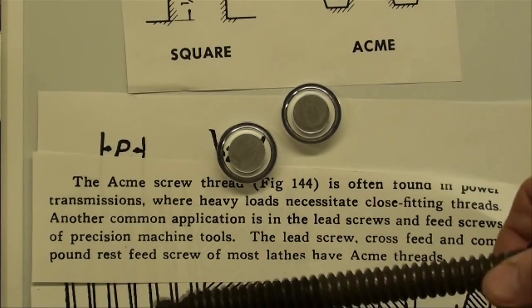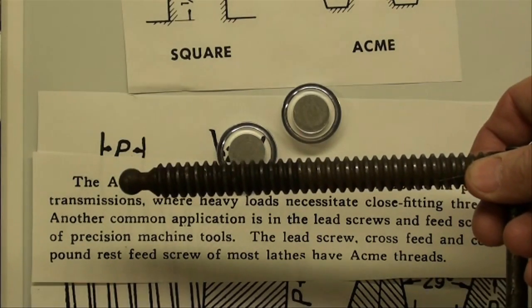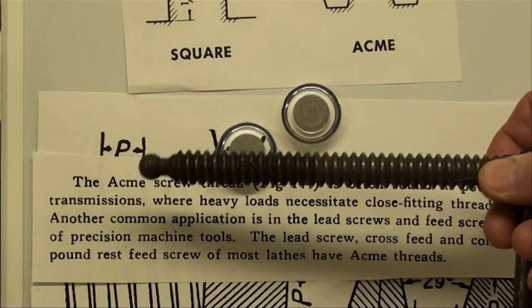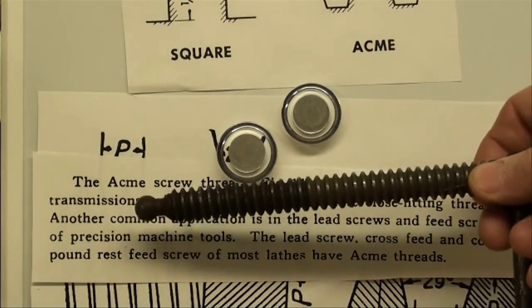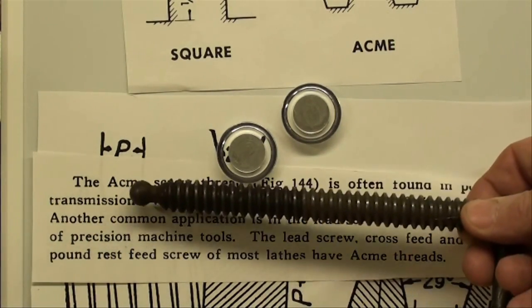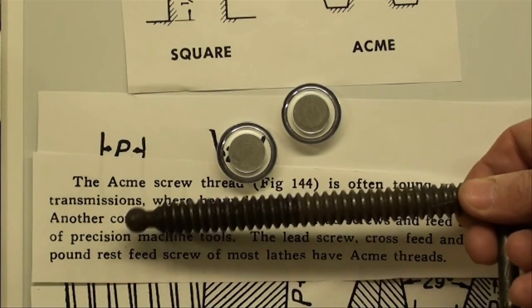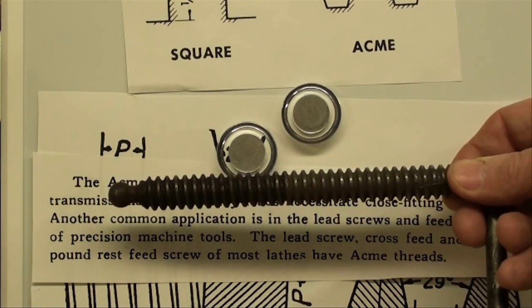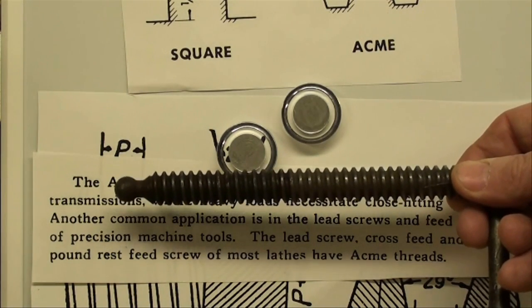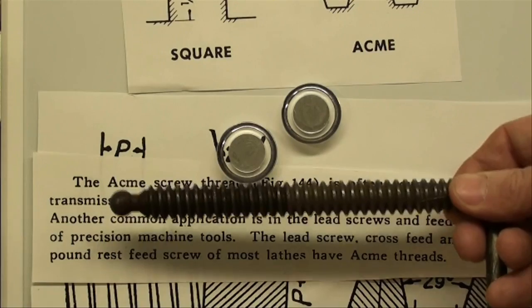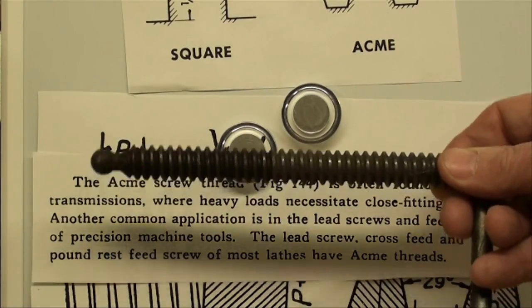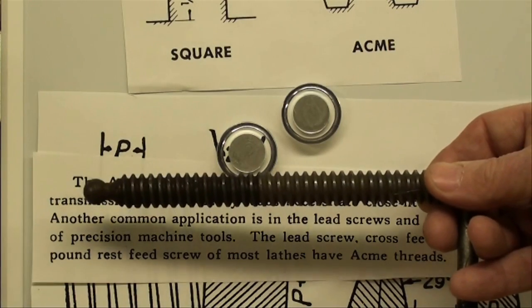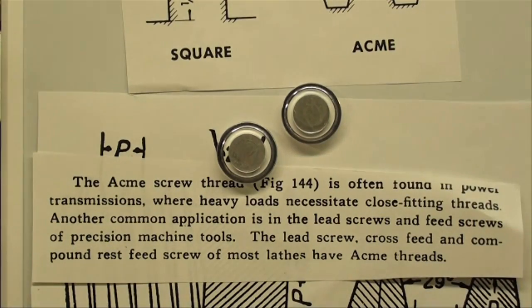You're going to see them in C-clamp screws, vice screws, and jacks and other places where a V-thread does not work very well. A V-thread, when you put a nut on it, does tend to tighten up and bind, and we aren't interested in tightening this. We're interested most of the time in transmitting motion, except for the case of a vice or a C-clamp.